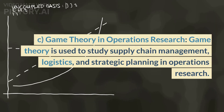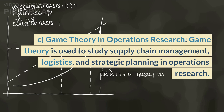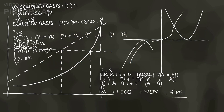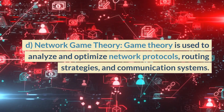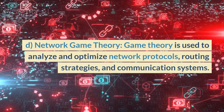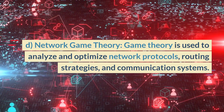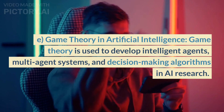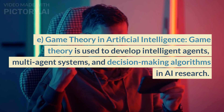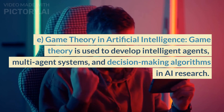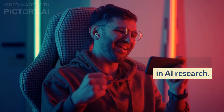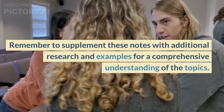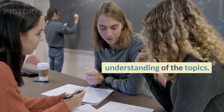c) Game theory in operations research — used to study supply chain management, logistics, and strategic planning; d) Network game theory — used to analyze and optimize network protocols, routing strategies, and communication systems; e) Game theory in artificial intelligence — used to develop intelligent agents, multi-agent systems, and decision-making algorithms in AI research. Remember to supplement these notes with additional research and examples for a comprehensive understanding of the topics.